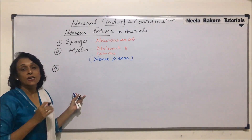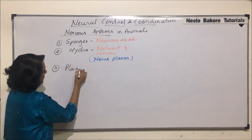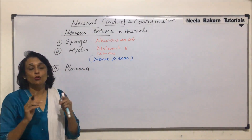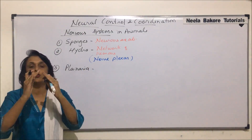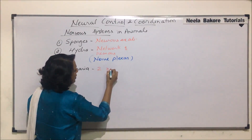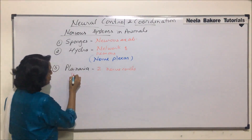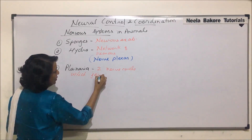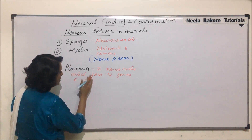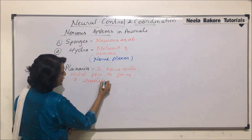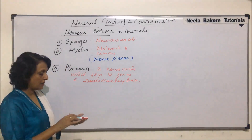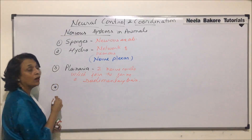The third category of animals are platyhelminthes, especially planaria. Planaria is a free-living platyhelminth. It has two lateral nerve cords which join in the anterior part to form a rudimentary brain.